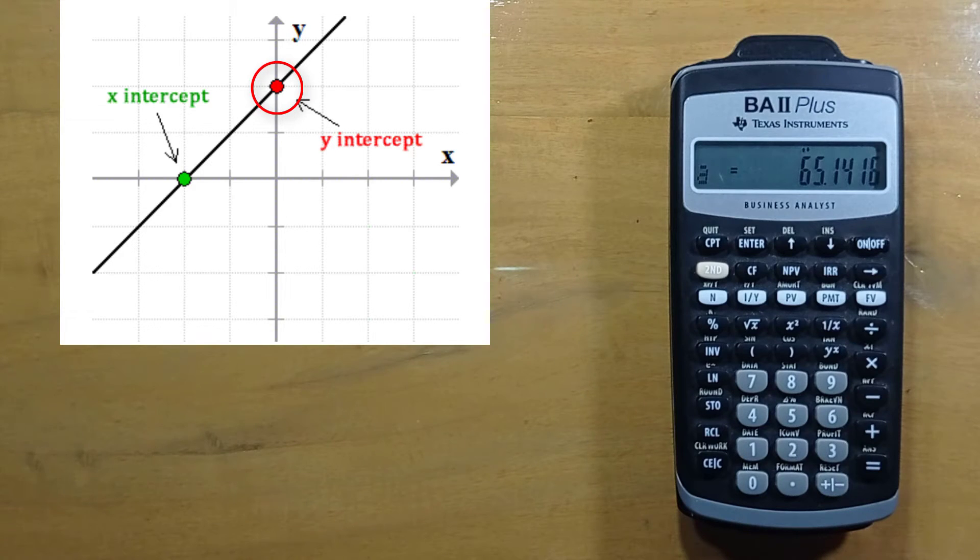a represents y-intercept. It is the place where the regression line cuts the y-axis. At this point, x is equal to zero. Here a is 65.1416.